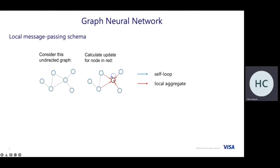GNN is a very common and popular framework to capture high-order relationships in the graph. It basically adapts the local message passing schema to capture these relationships. Consider an undirected graph where we try to compute the embeddings of a target node. GNN aggregates information from its neighborhood, and sometimes keeps the self-loop relationship to preserve the partial information of the node itself.